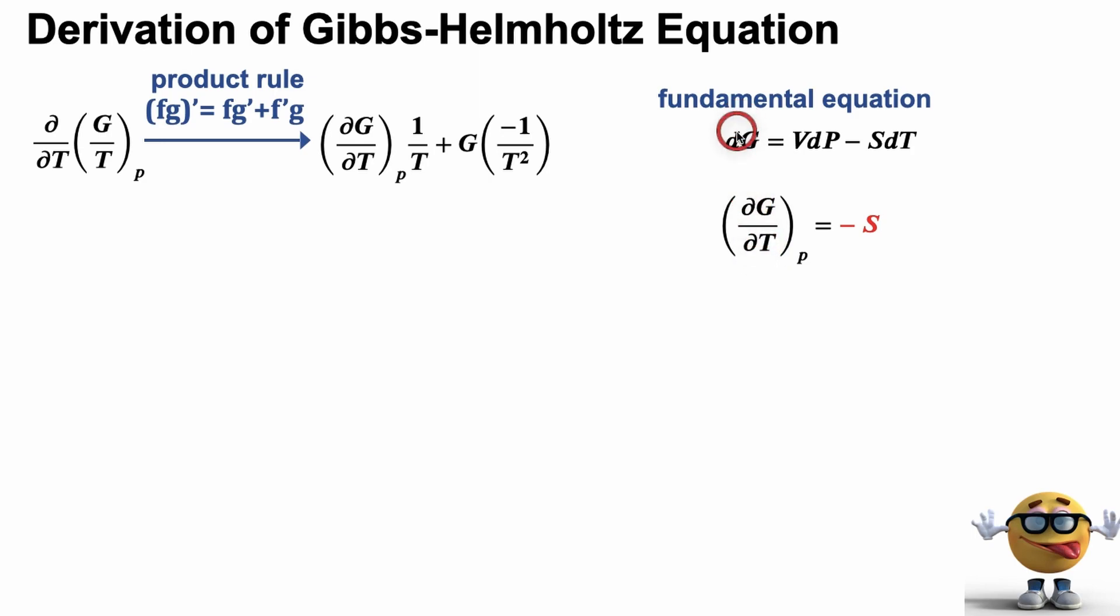Now, these d's changed to the partial d's, kind of the curly d's, because G depends on more variables than just temperature alone. So that's why we had to change it. And that equals negative S, because after we divide by dT, we're left with negative S here. So this derivative is this derivative here, and that's negative S. So we can substitute that in.